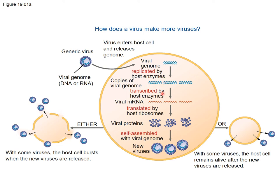There are a couple of different ways viral particles can be released from the cell. On one hand, some viruses release viral particles by causing the cell to burst, so the cell dies, but the new viral particles are released and can infect more cells. On the other hand, some viruses can leave the cell while it remains living — the cell continues producing viral particles, which are released and then go on to infect other cells.